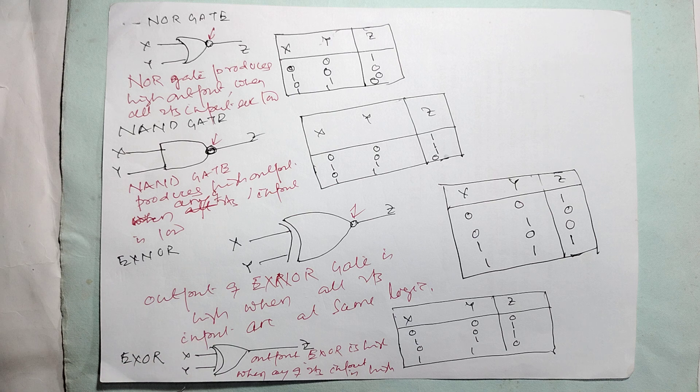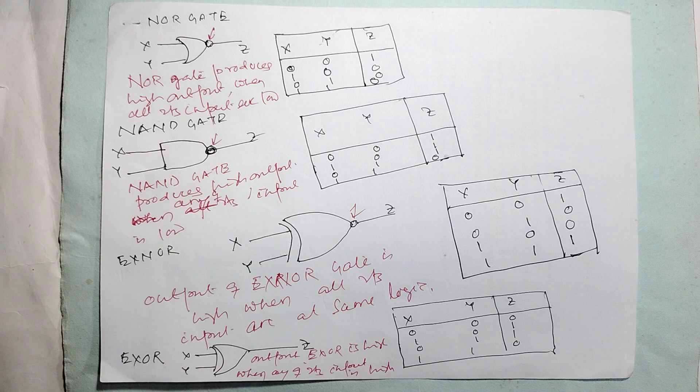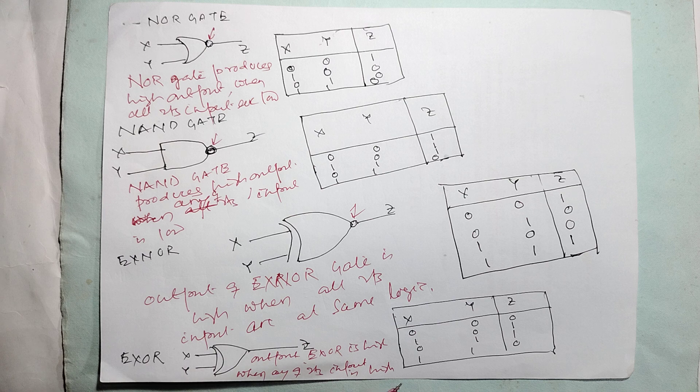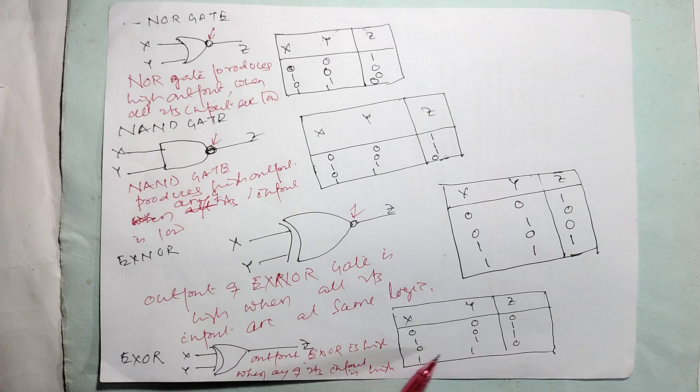So XOR. XOR means everything is there, but this NOT symbol is not there. In this case, what happens? Output of XOR is high when any of its inputs is different. That means zero-zero is zero, one-one is zero, zero-one is one, one-zero is one. The presentation is completed.